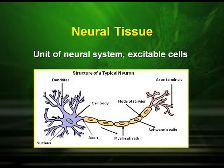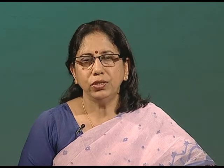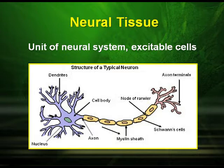The next type of tissue is the neural tissue, also known as the nervous tissue. These are the unit of neural cells and they are excitable cells. Looking at the structure of neural tissues, we see that it has a cell body which is known as the cyton, a quite prominent nucleus, the dendrites which are the receptors, the axon and the myelin sheath which covers it. They have nodes of Ranvier and the axon terminals.